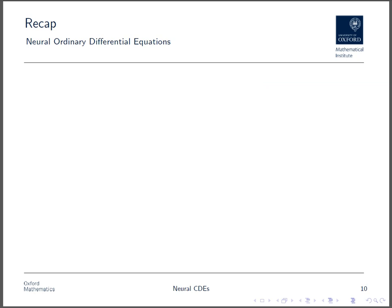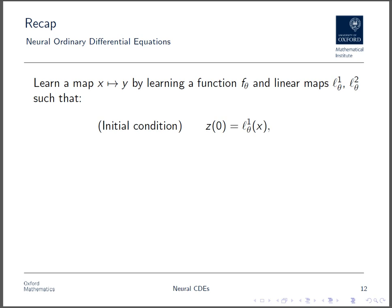So let's begin with a quick recap of the Neural Ordinary Differential Equation Model. We're going to try and learn a map between some object x and some object y, by learning functions f, l1, and l2, such that we have this initial condition depending on the input x, which we then modify in continuous time according to this ordinary differential equation, with vector field f.